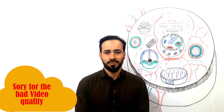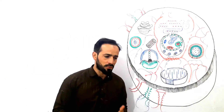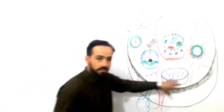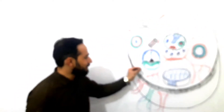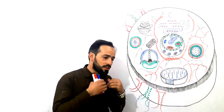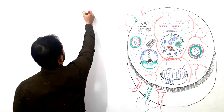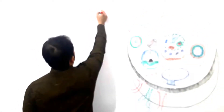Hello dear friends, assalamualaikum, and welcome back. As you know, we have decided to discuss the structure of the cell. I have drawn a cell here and labeled each part. We will discuss each part of the cell in great detail, so stay with us and keep watching the videos regarding the structure of the eukaryotic cell. In this video I am introducing all parts of the cell, and in the next lectures we will discuss each part in detail — its functions and structure.